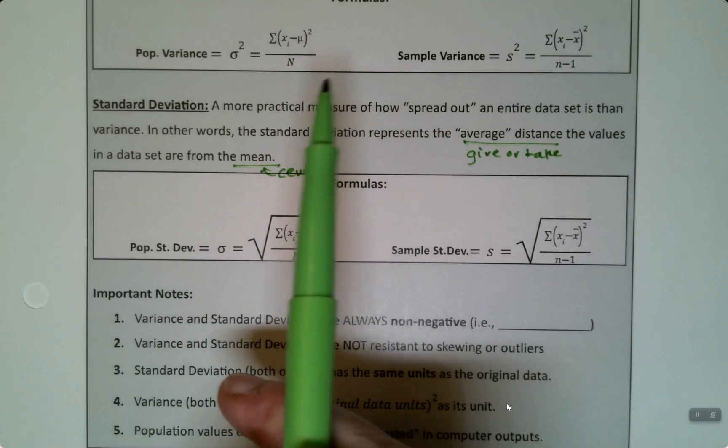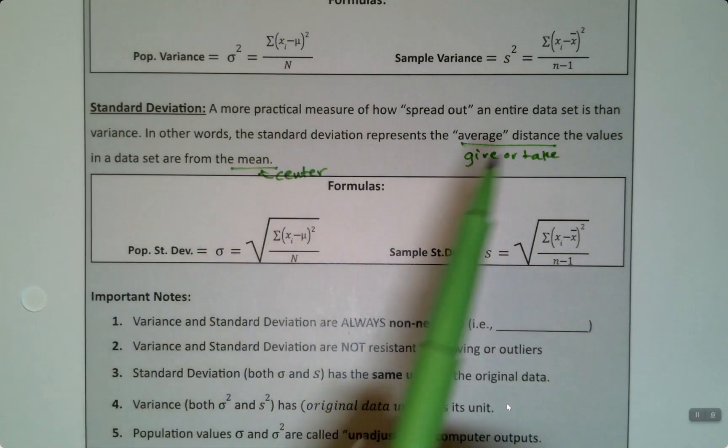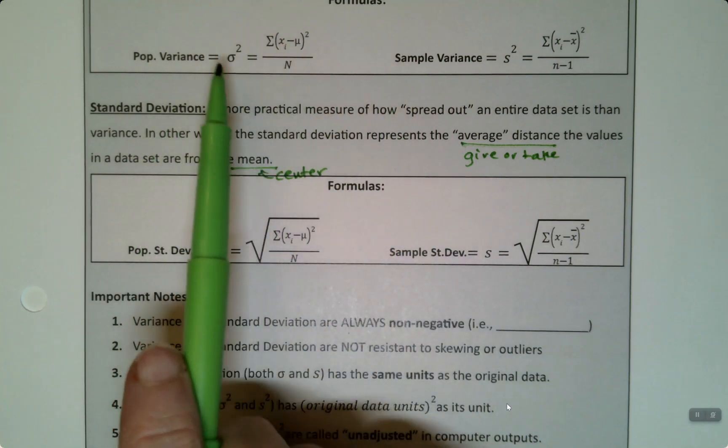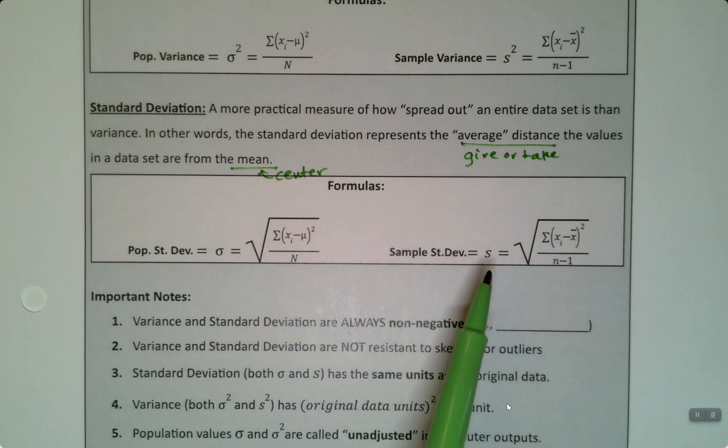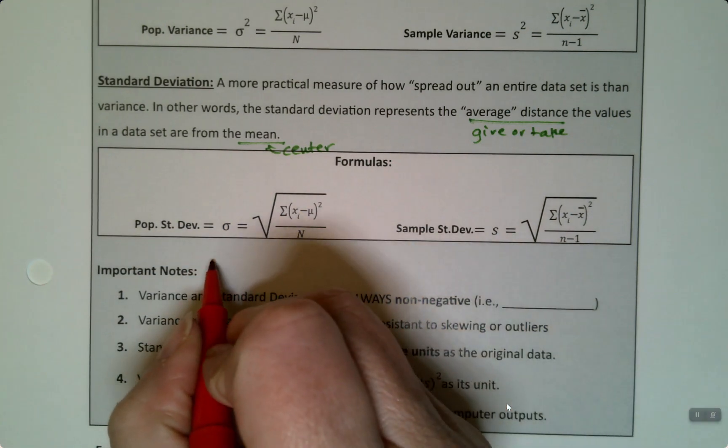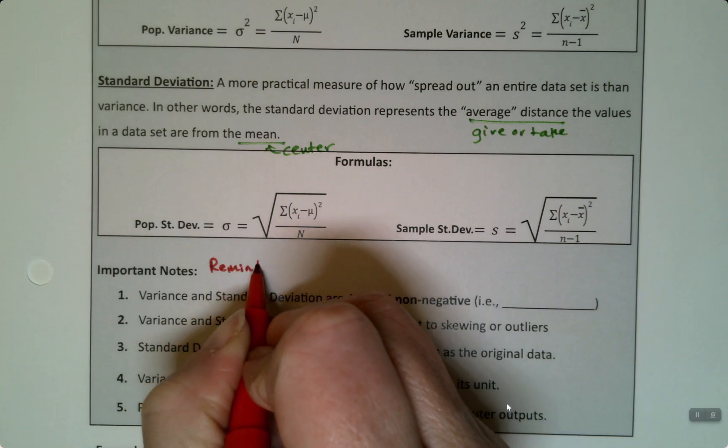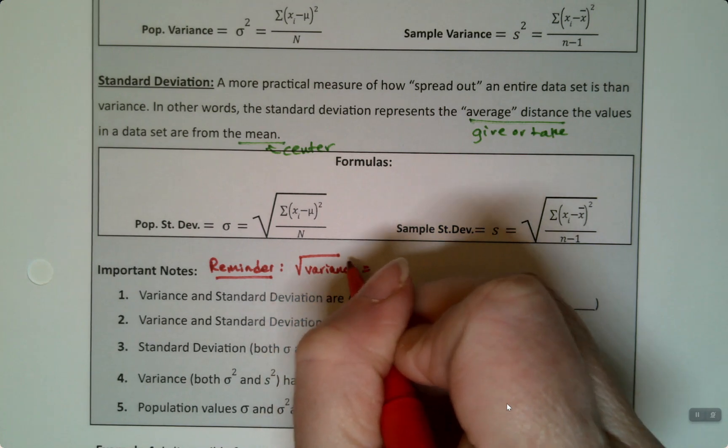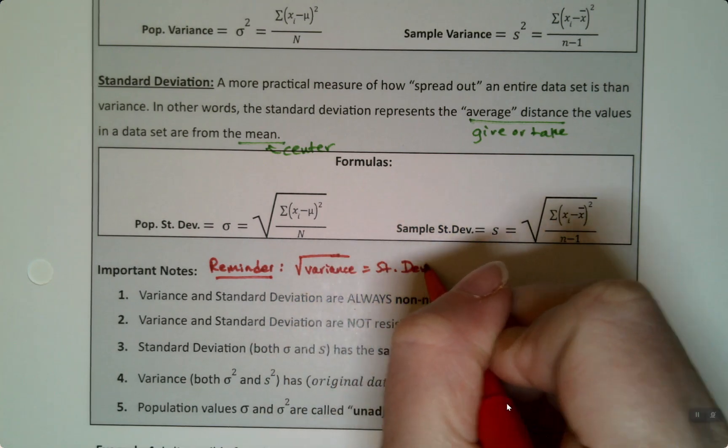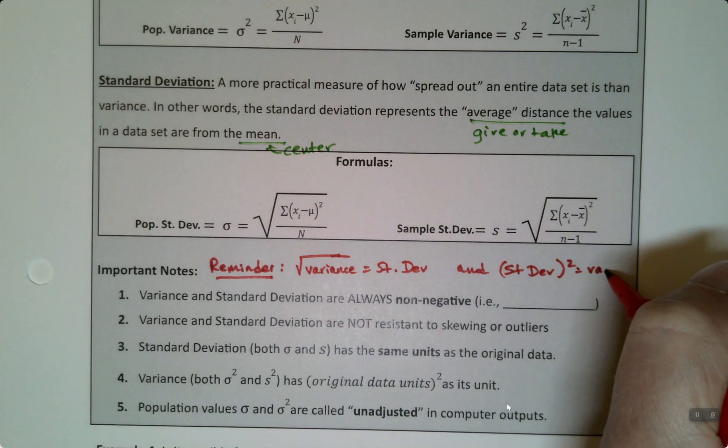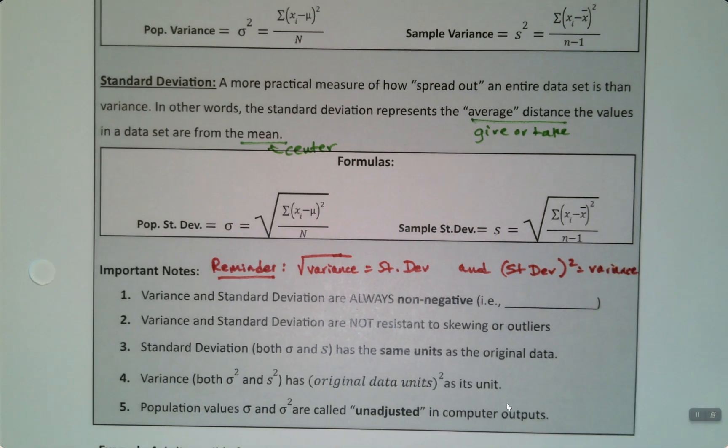And then it never pays to forget that the population variance and population standard deviation, and sample ones as well, are related to each other. That the variance, if you take the square root of it, you get the standard deviation. If you take the standard deviation and you square it, you get the variance.